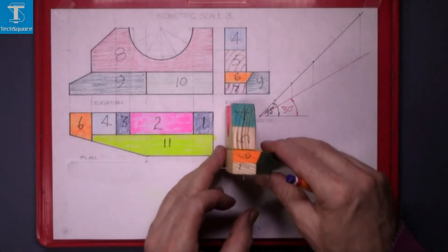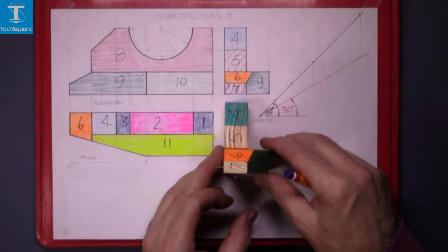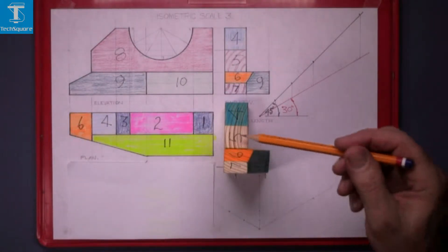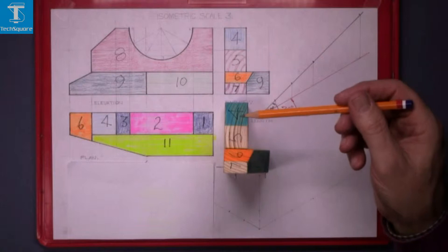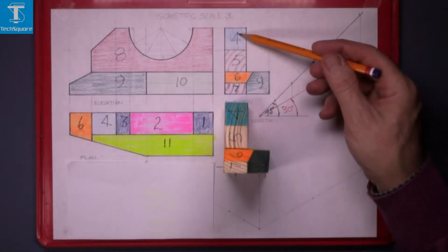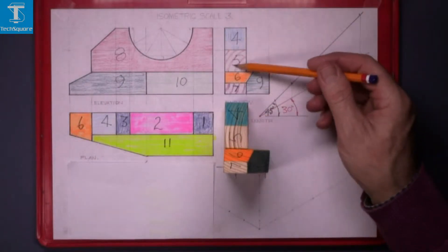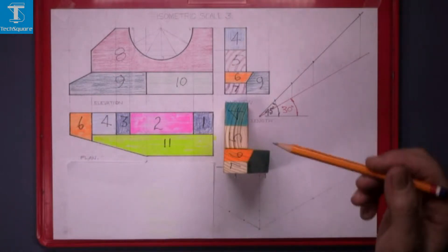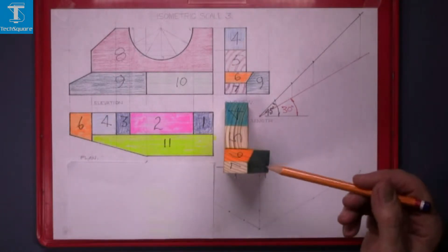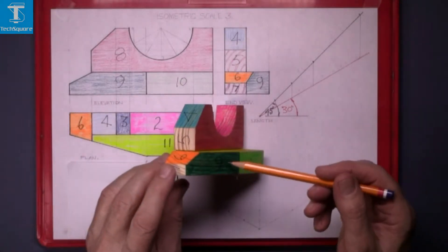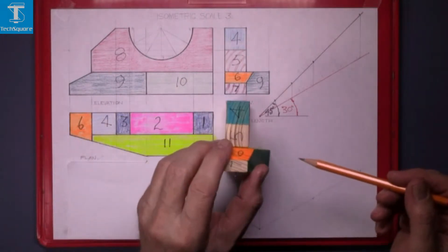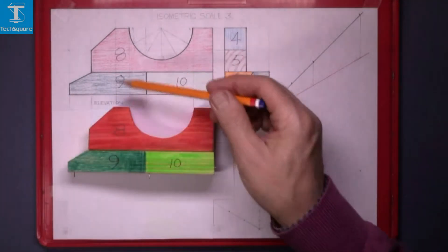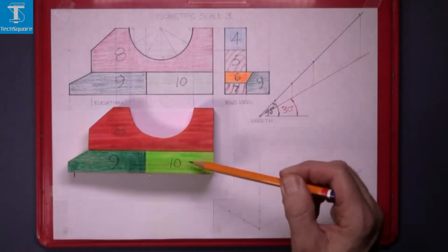The end view. That's it there. 4, 5, 6 is the sloping surface and 7 is the end and 9 is along the side here, a sloping edge. And the elevation — surface 8, 9 and 10.